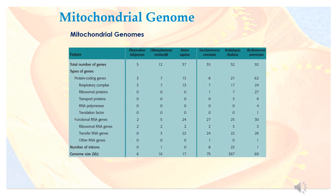Comparative genomics is the comparison of gene numbers, gene locations, and biological functions of genes in the genomes of different organisms.